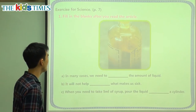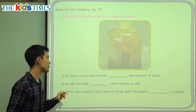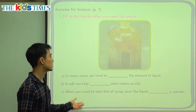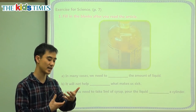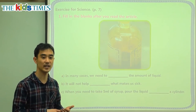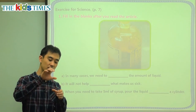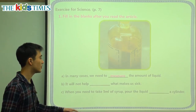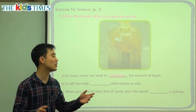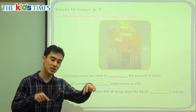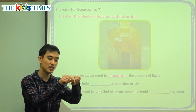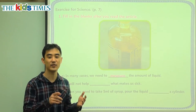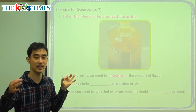Now we have three review questions. Question A: In many cases, we need to blank the amount of liquid. The medicine box says drink only 10 milliliters, so we have to count how much milliliters — that is called measure. Another tool for measuring is a ruler. We measure the paper: 5 centimeters, 7 centimeters. Measuring is counting how big something is — for example, I am 175 centimeters.